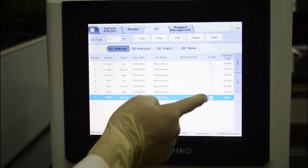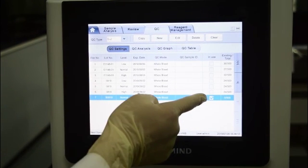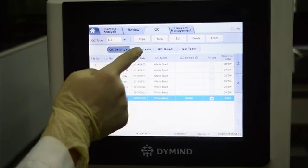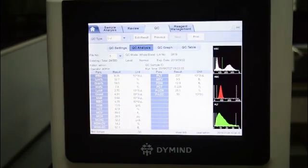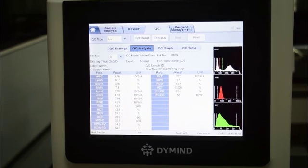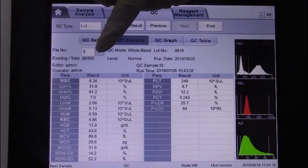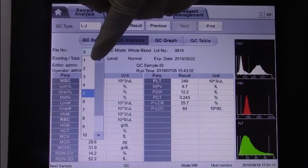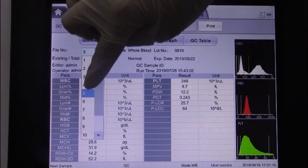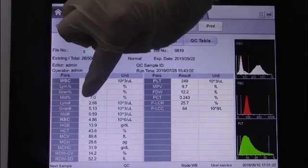Choose the corresponding lot number of QC in use. Click QC Analysis. Choose the corresponding file number which matches the controls.